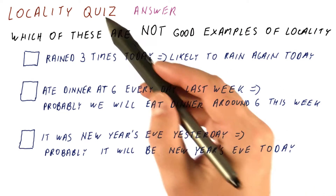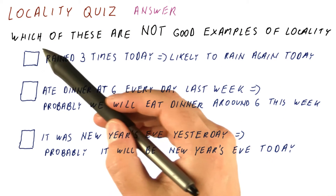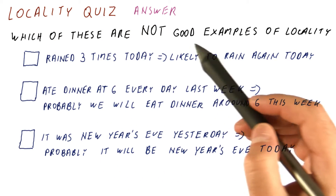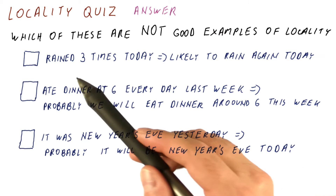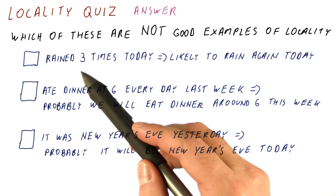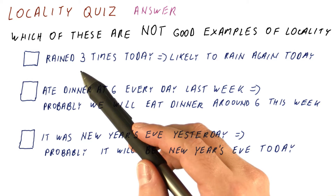Let's look at the answer to our locality quiz. We were asked which of these are not good examples of locality. The statement that it rained three times today, so it will likely rain today again, is a decent example of locality.